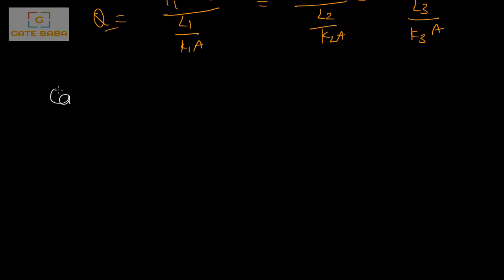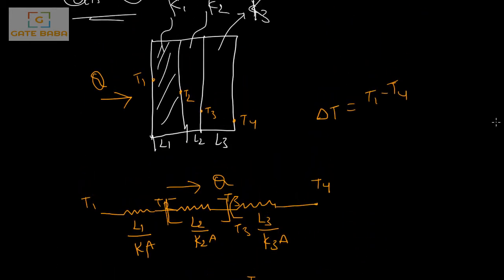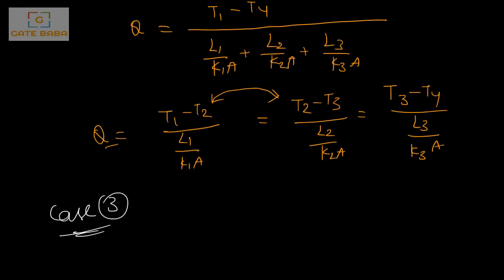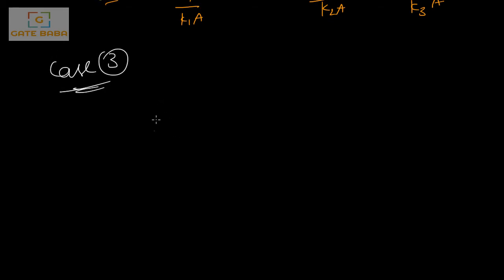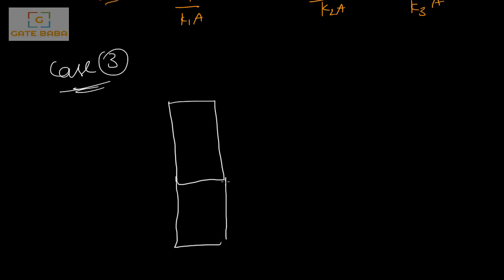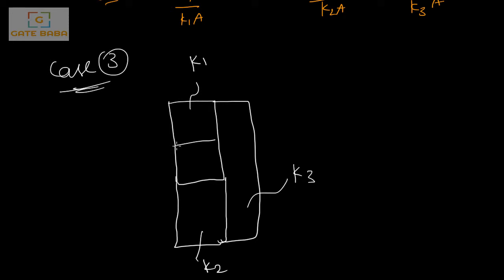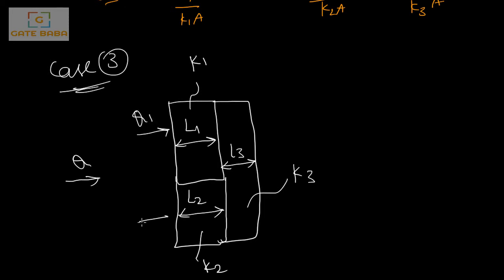Case 3 is somewhat more complicated. Here the slab no longer has a constant cross-sectional area throughout. Instead, we have different layers stacked one over the other: layer 1 and layer 2 are parallel to each other, and layer 3 is a separate slab in series. Layer 1 has conductivity K1, layer 2 has K2, and layer 3 has K3. Layers 1 and 2 share the same thickness, and heat divides into Q1 and Q2 through them.